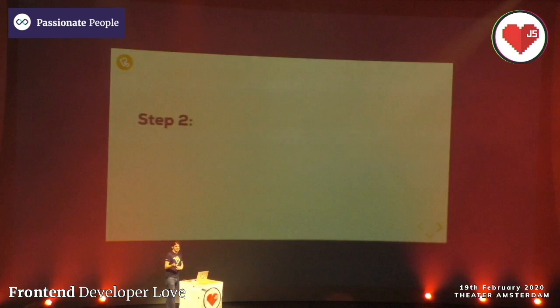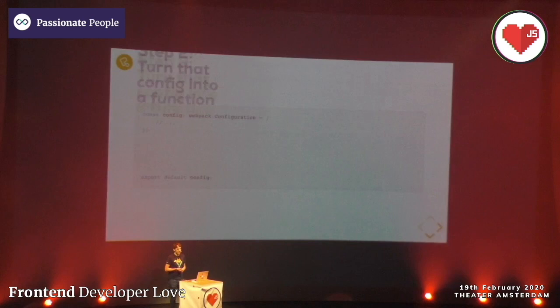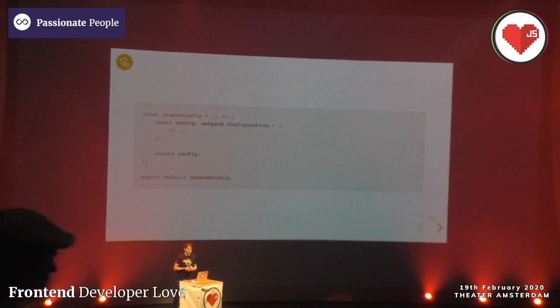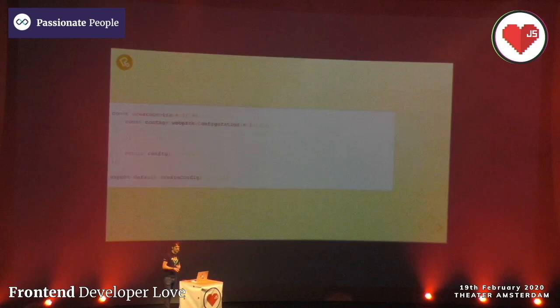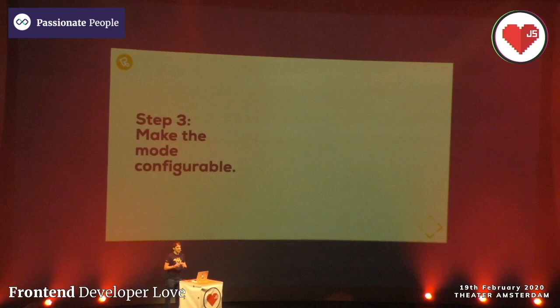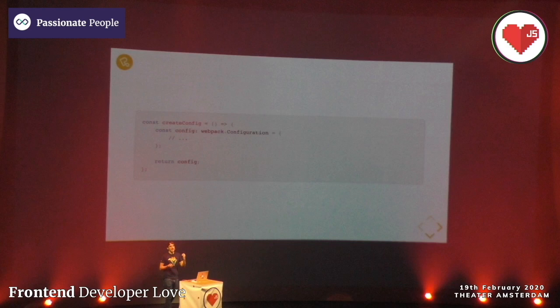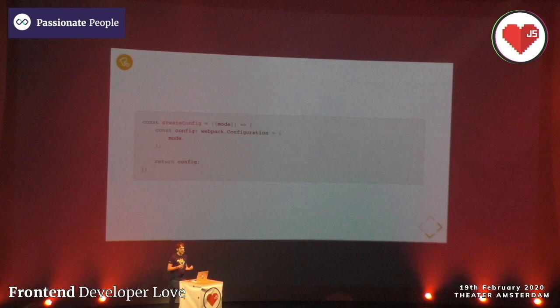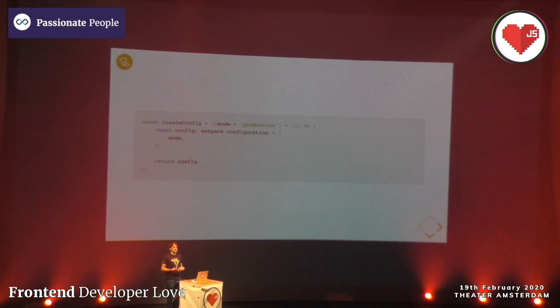Step two: turn that configuration into a function. We take this config and wrap it in a function, so now we have a function that returns a webpack configuration. Step three: make the mode configurable. Once we have a function, we can pass in arguments from the webpack CLI. We pass in the env, destructure it, pull out the mode, and pass it to the configuration. We also apply defaults - in this case, I'm going to default to production if no environment is specified.